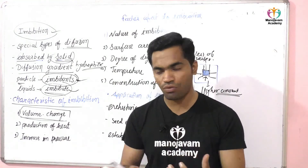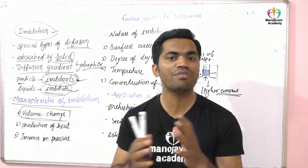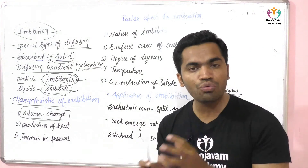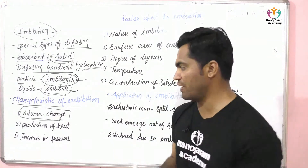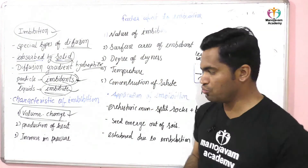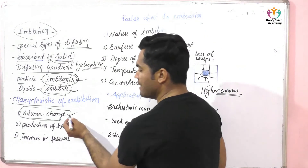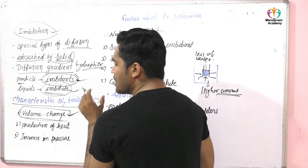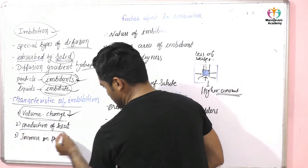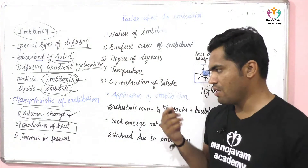The volume increases because water enters inside the particle, and due to this, turgor pressure is produced. This turgor pressure causes the volume to increase because of the higher amount of water present inside the particle.